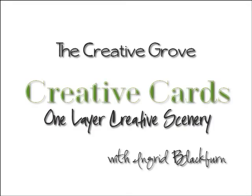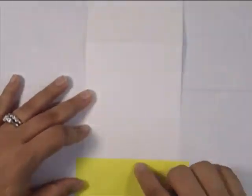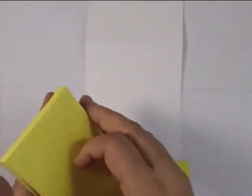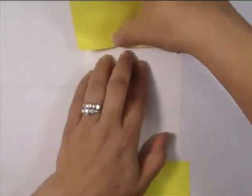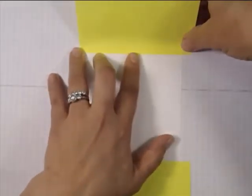Hi, I'm Ingrid Blackburn and today we're going to make a one layer creative scenery card. I am using half a sheet of ultra smooth white paper that I've cut down the middle at four and a quarter by eleven inches and I'm gonna create a half inch border.